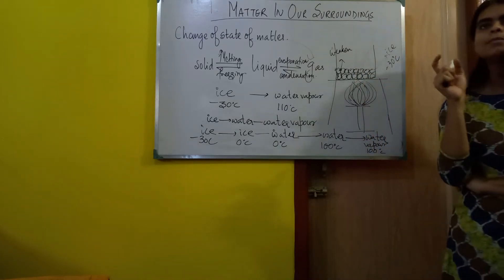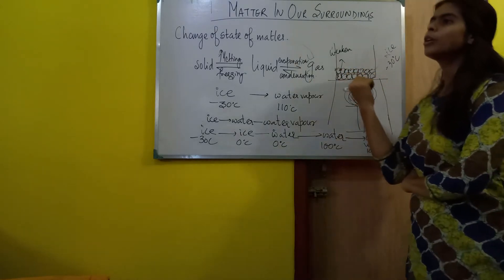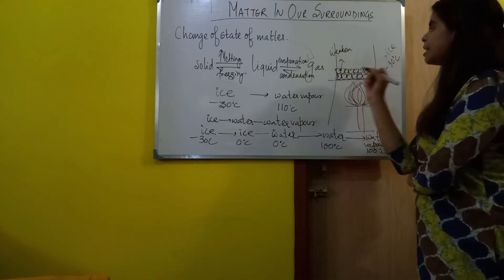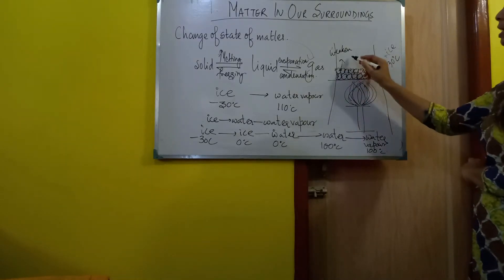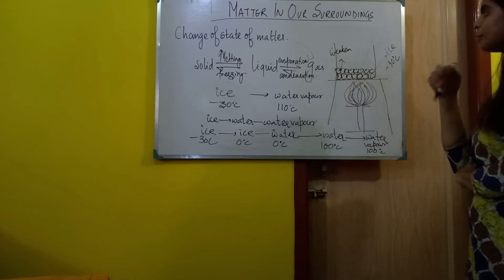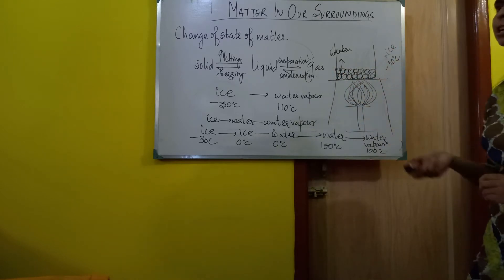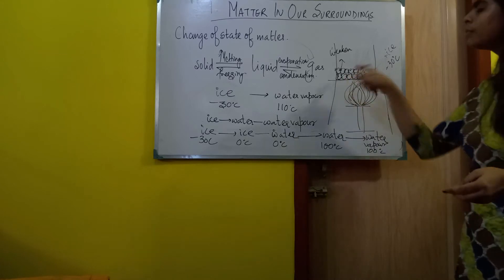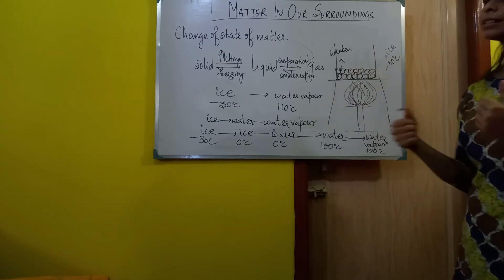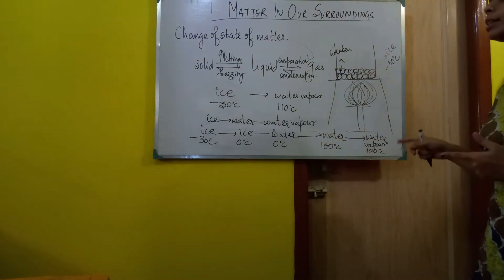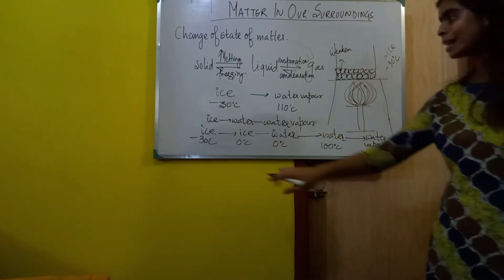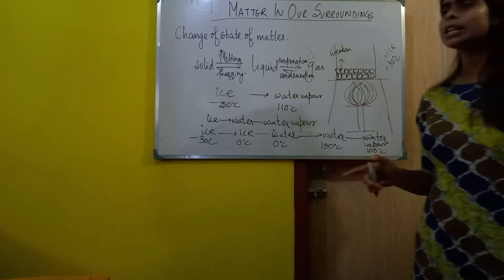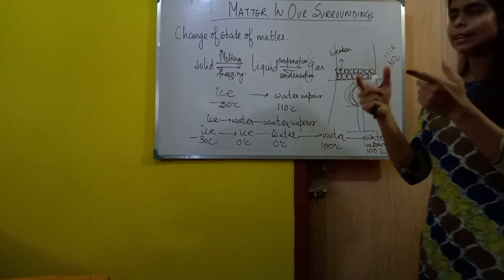You may have a doubt — solids are closely packed and have a strong intermolecular force of attraction, so how will the particles move? They won't move freely, but rather they will start vibrating in their mean position. Each particle will absorb this heat as kinetic energy and start vibrating. As they vibrate, the intermolecular force of attraction between the particles will weaken. Along with that, you will see a change in temperature — the ice is converting from minus 30 degrees to 0 degrees.